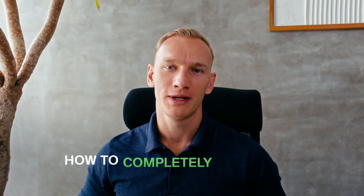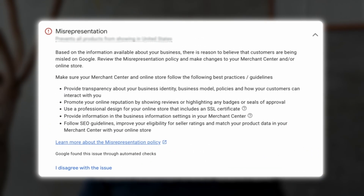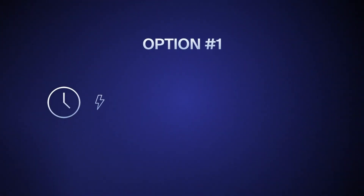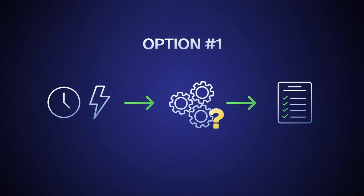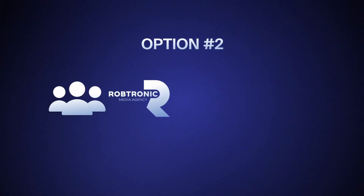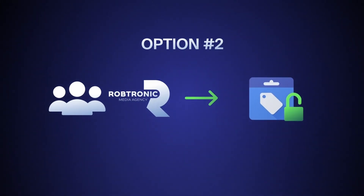That was the full guide on how to completely unsuspend your Merchant Center from the misrepresentation error. You now have two options: invest your own time using this guide, or reach out to me and my team to help get the suspension lifted. After checking the updated Notion template in the description, make sure to watch the recommended video where I explain how you can use AI on the front end of your business within the rules and regulations of Google Ads and Merchant Center.